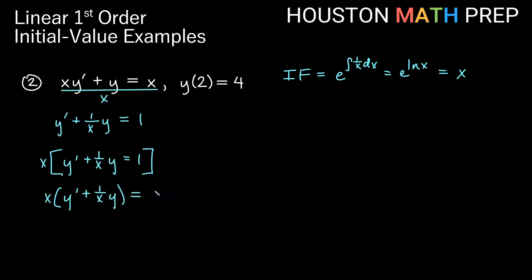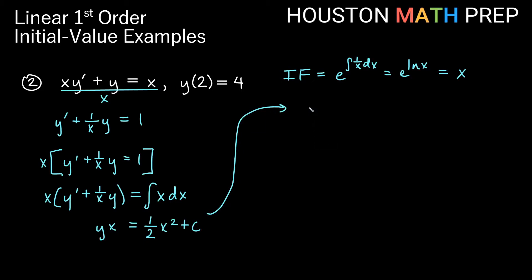On the right side we now have x. We integrate both sides with respect to x, but remember the left side is just a product rule of y times the integrating factor, so taking the antiderivative gives us y times x. The antiderivative on the right side by the power rule gives one half x squared plus c. To solve for y we divide both sides by x, giving y equals one half x plus c over x. This is our general solution.